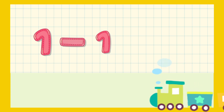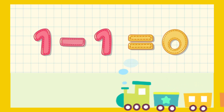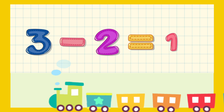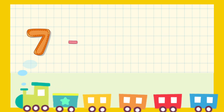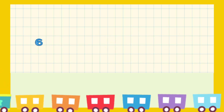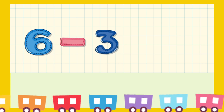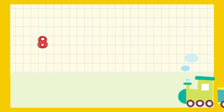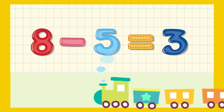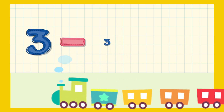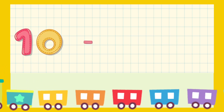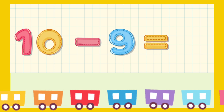1-1 is equal to 0. 3-2 is equal to 1. 7-5 is equal to 2. 6-3 is equal to 3. 8-5 is equal to 3. 3-3 is equal to 0. 10-9 is equal to 1.